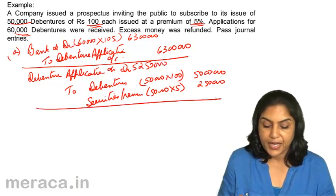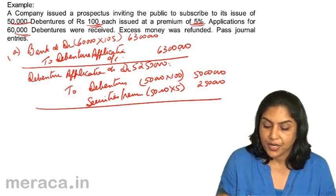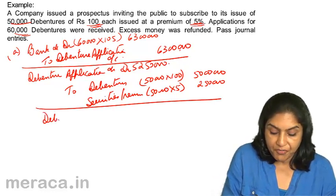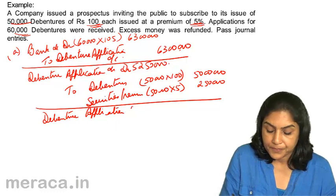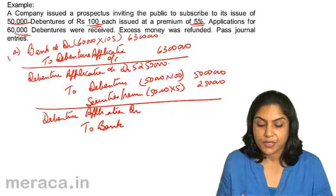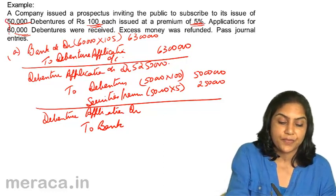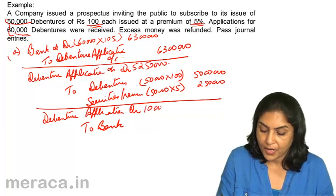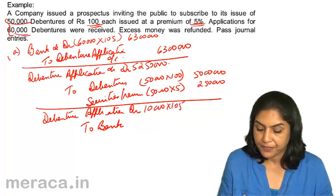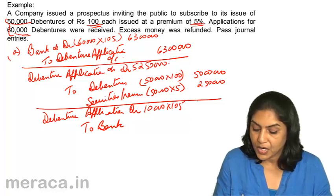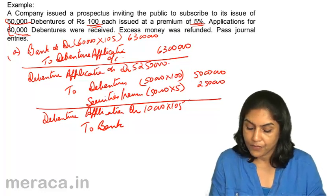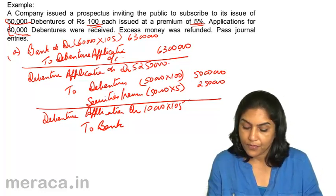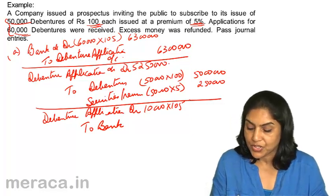The remaining amount lying in the debenture application account is refunded. Debenture application account debit to bank, Rs.10,50,000. This is the extra 10,000 applications into Rs.105, which is Rs.10,50,000.